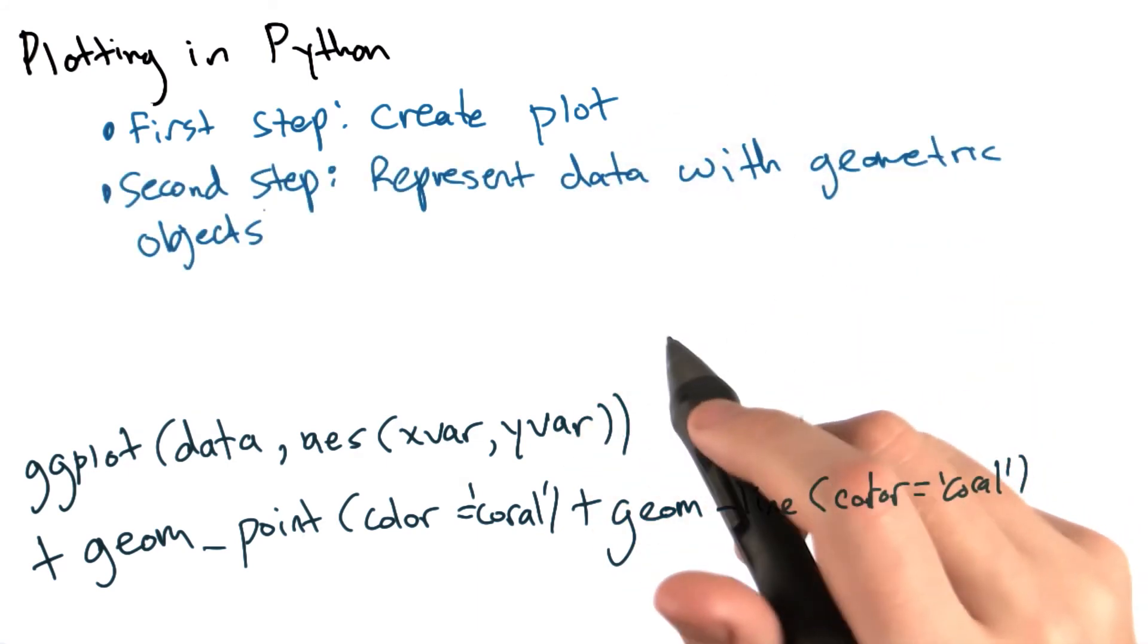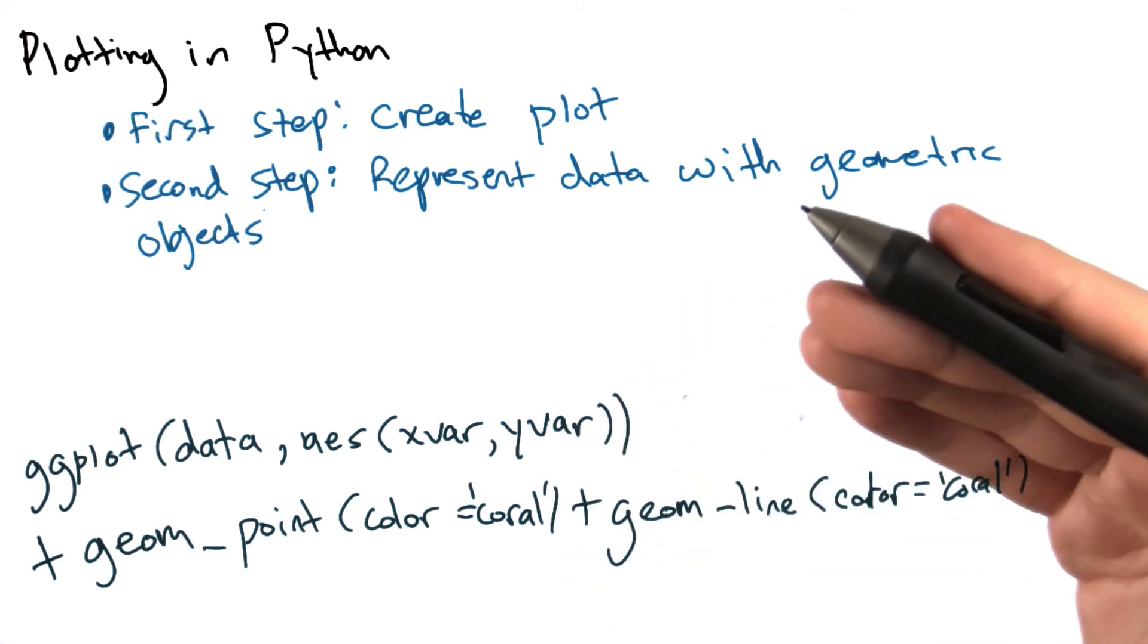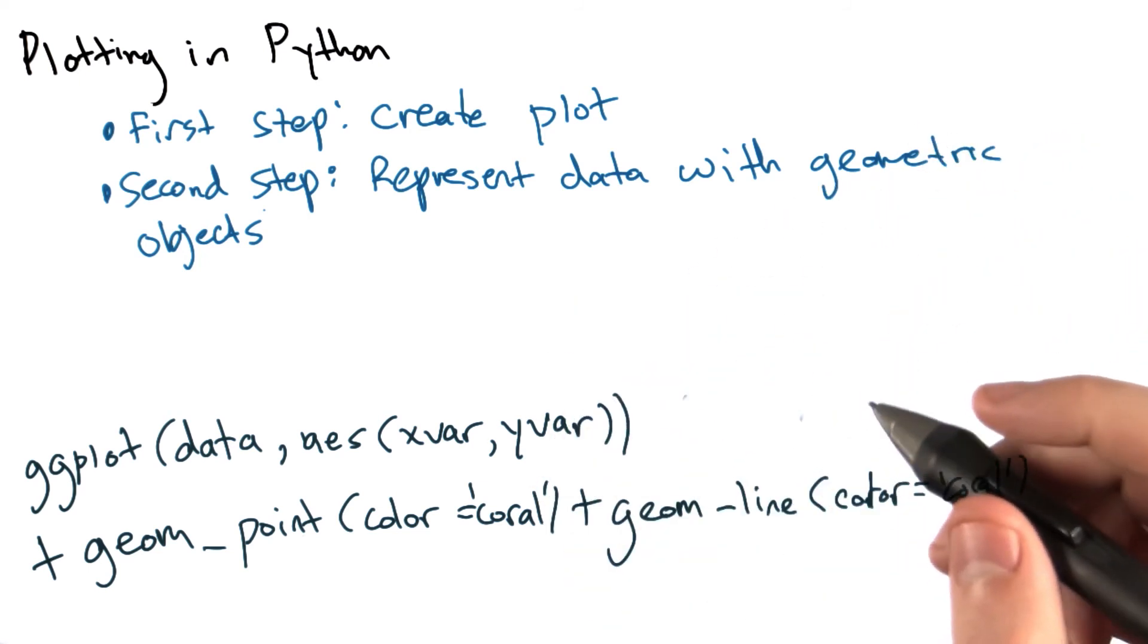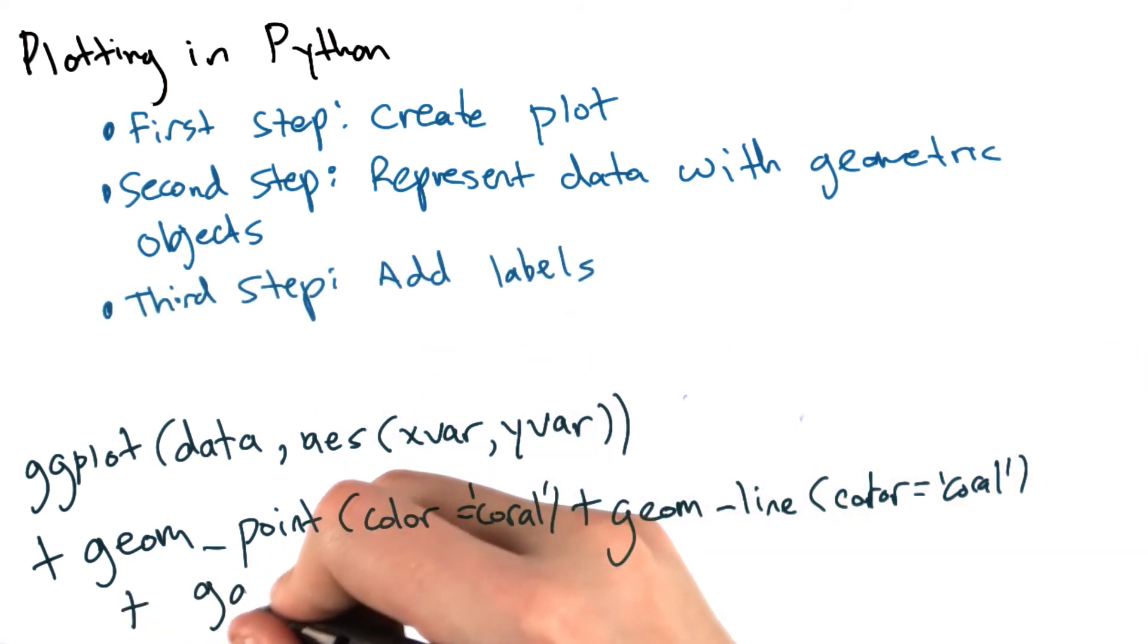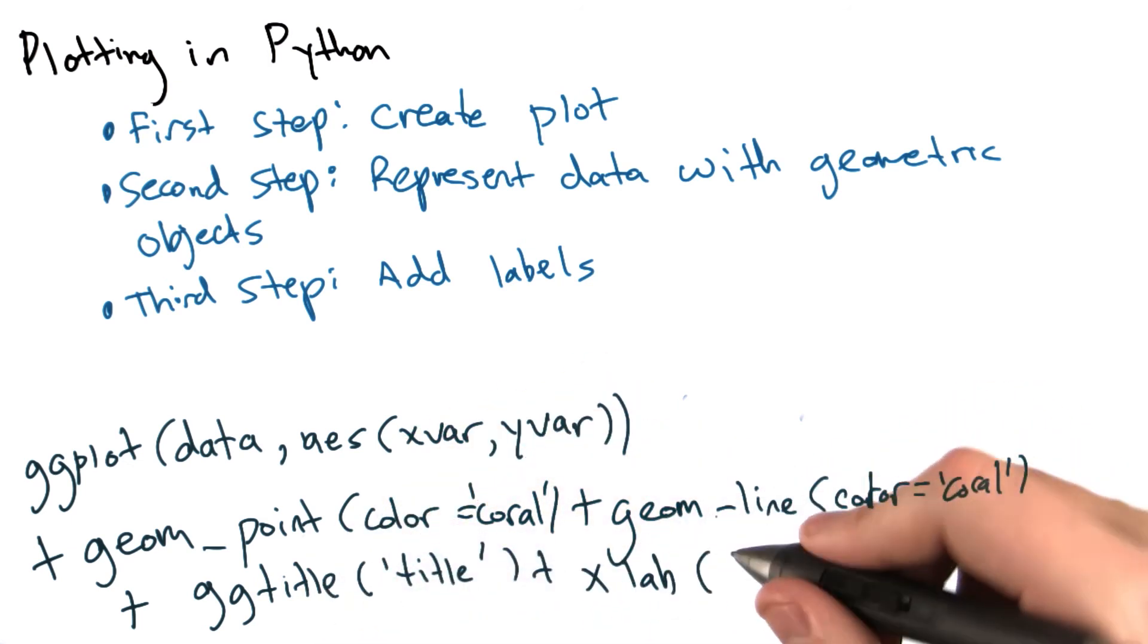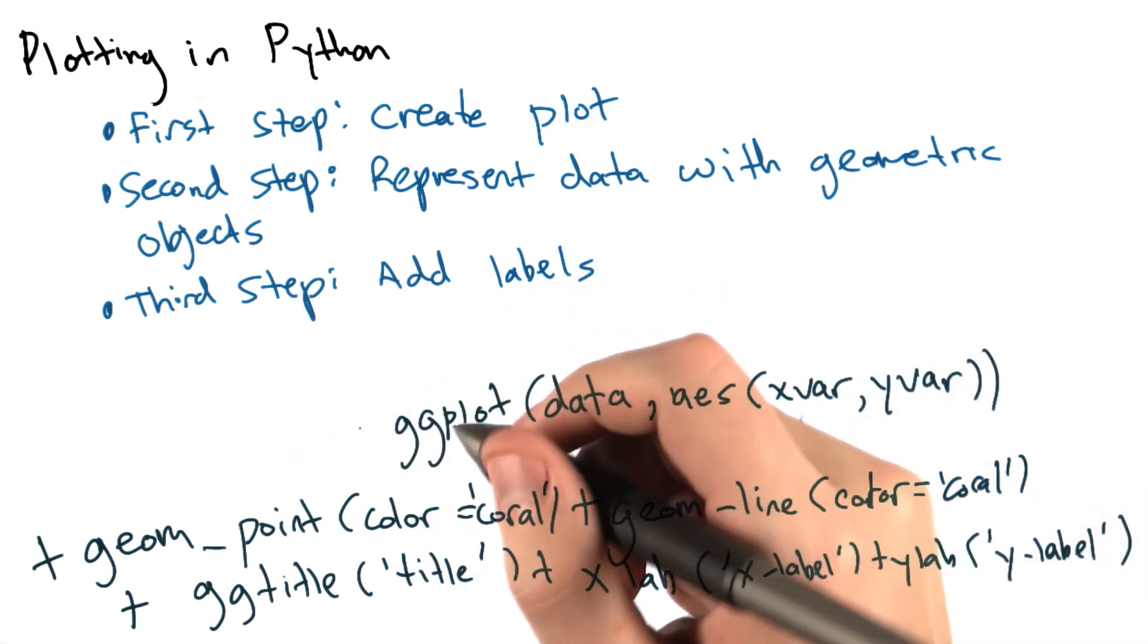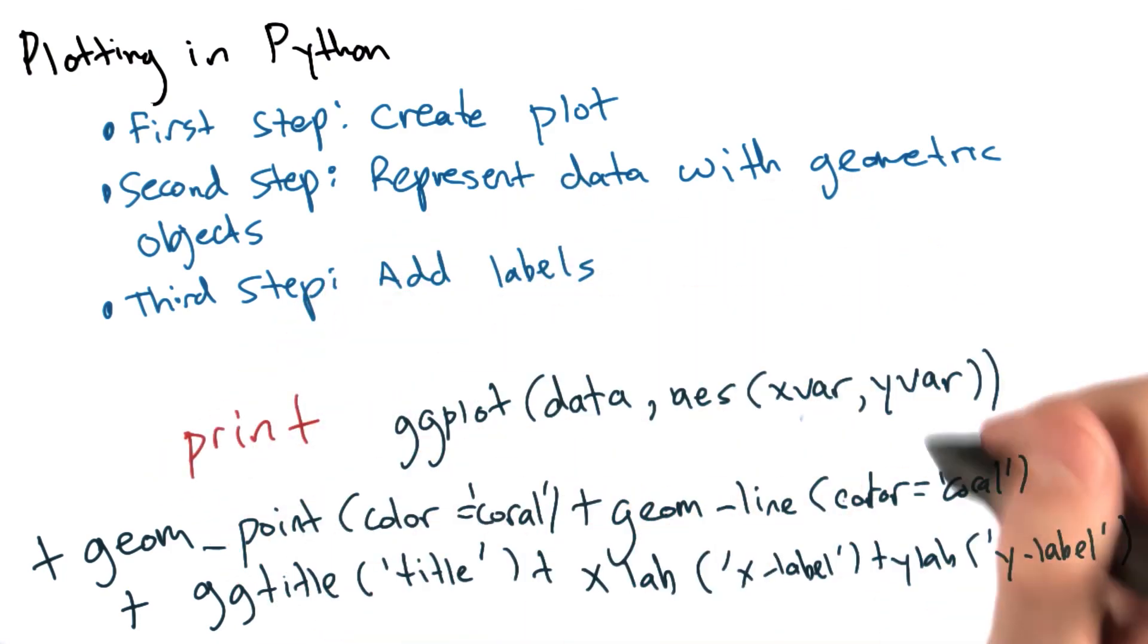The final step here is going to be adding some labels so that our plot will have some context, like a title, or an xlabel, or a ylabel. This can be done much in the same way that we added the points and lines to our plot. We can add a ggtitle to title our plot, an xlab, which will be xlabel, to provide an xlabel, and a ylab to do the same with the y-axis. Now, all I have to do is precede this entire command by print, and I'll produce a plot in Python.